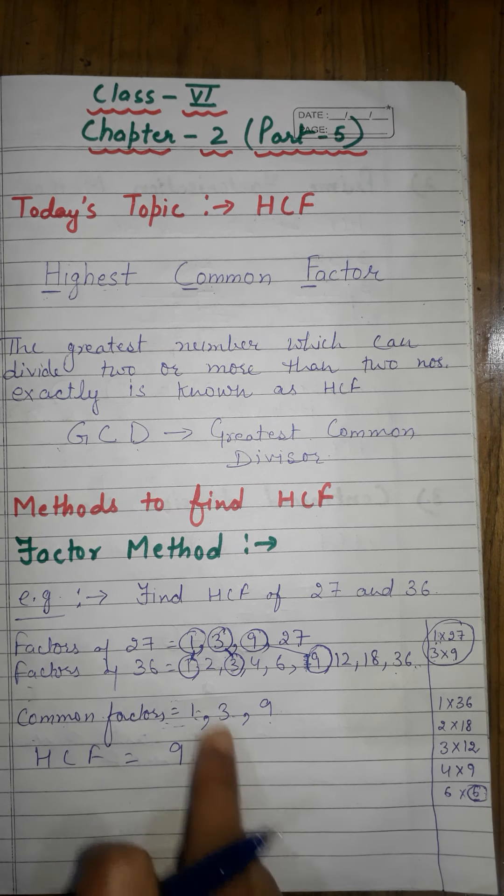The next method is the Prime Factorization Method. As its name suggests, we again take the same numbers 27 and 36. We need to find the HCF of 27 and 36, but this time using prime factorization — meaning we find the prime factorization of each number.